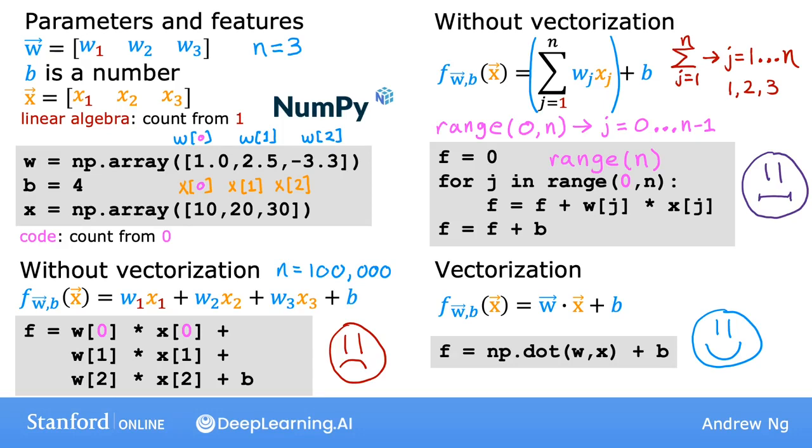And the ability of the NumPy dot function to use parallel hardware makes it much more efficient than the for loop or the sequential calculation that we saw previously. Now this version is much more practical when n is large because you are not typing w[0] times x[0] plus w[1] times x[1] plus lots of additional terms like you would have had for the previous version.